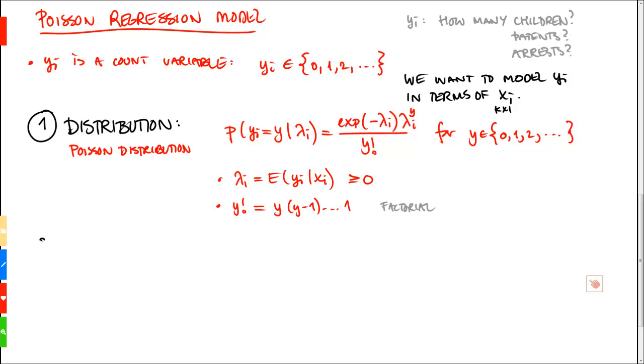The second step is we need a parameterization that serves the purpose of linking xi to the parameter lambda i. So, we want lambda i as a function of xi.